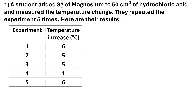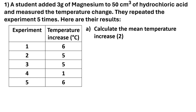Question 1. A student added 3 grams of magnesium to 50 centimetres cubed of hydrochloric acid and measured the temperature change. They repeated the experiment 5 times. Here are their results. Question A: calculate the mean temperature increase.